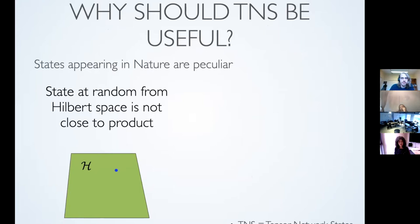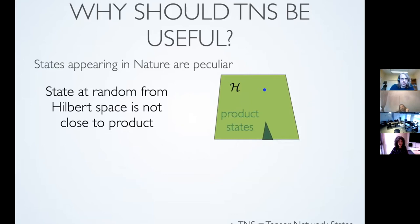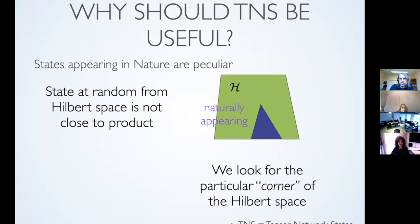If you just fish one state out of the Hilbert space at random, it is a very entangled state, very far from product states. But the kind of states that we are interested in are not so far from product states. Product states already give us some of the interesting physics in mean field theory. What we are interested in is going beyond that — states that appear naturally or are physically relevant. People talk about this as the physically relevant corner of the Hilbert space.